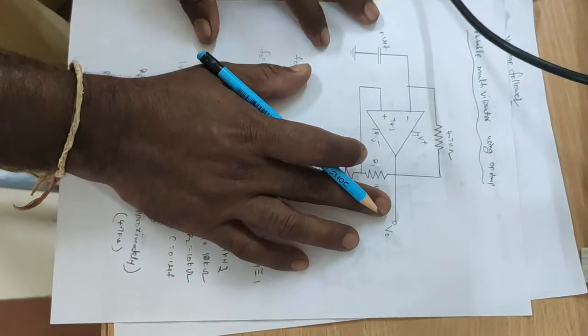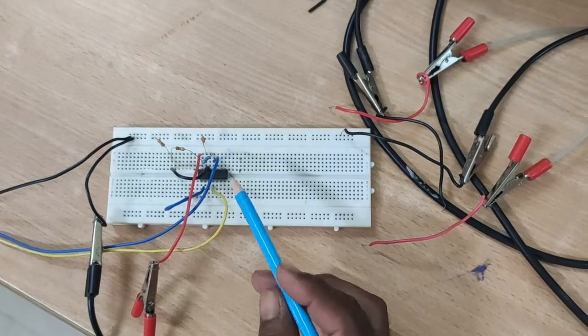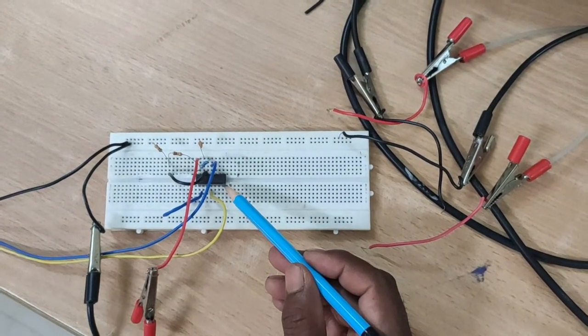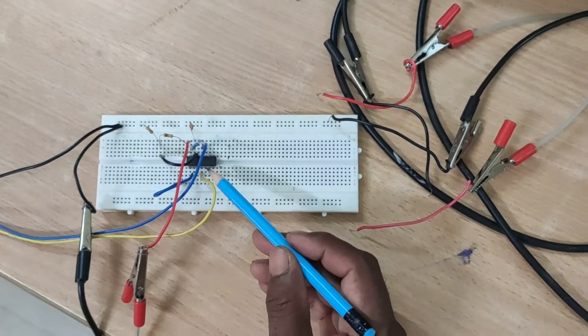And the same circuit is connected on the breadboard. This is the astable multivibrator using op-amp. Here the IC used is TL084. In this IC, four op-amps are inbuilt.